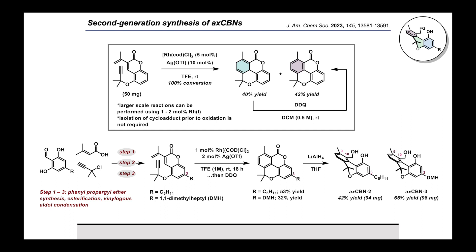We briefly examined the scope of this reaction, most notably using the n-pentyl and 1,1-dimethylheptyl substrates which bear the C3 aliphatic chains common to cannabinoids. Upon catalytic cycloisomerization and subsequent oxidation to the corresponding biaryls, the biaryl lactones were then reduced with lithium aluminum hydride, yielding the targeted second-generation AXCBNs.